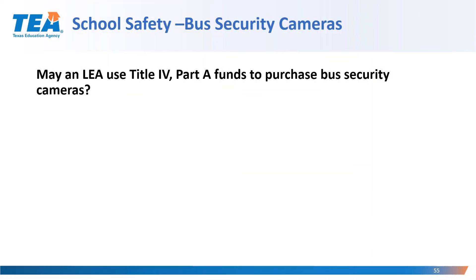May an LEA use Title IV Part A funds to purchase bus security cameras? This was a very popular question last year as well as this year. The answer is yes, if the LEA has supporting documentation that bus security cameras meet all requirements listed in the use of funds document, in addition to the comprehensive needs assessment and the campus improvement plan. Also, if an LEA has an allocation of at least $30,000, it must also provide activities in all three categories — so a district would not be able to spend 100% of their funds on bus security cameras.